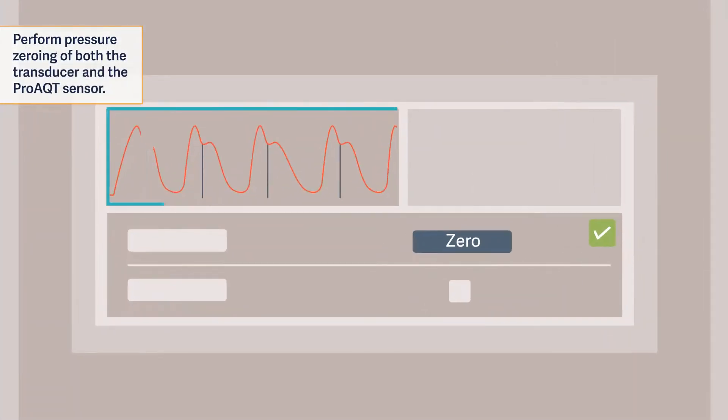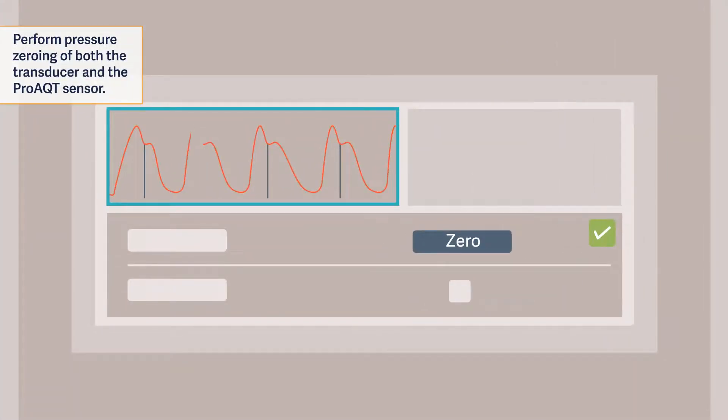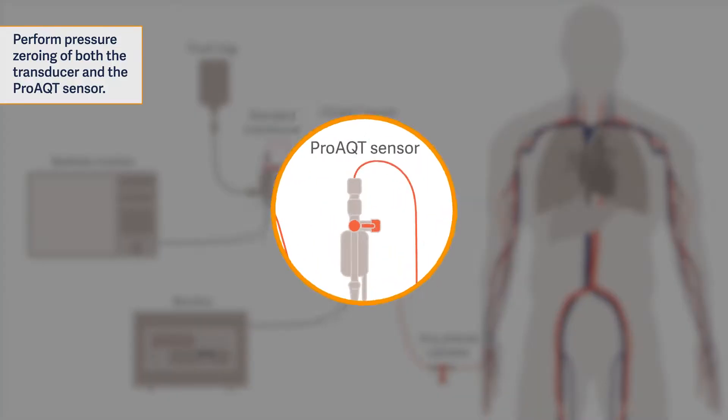To zero the pressure signal, tap the pressure curve area on the monitor. Open the arterial system to atmosphere for zeroing.